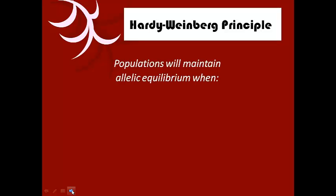Basically they said that populations will maintain an allelic equilibrium when certain conditions exist. Let's break down what this means. Allelic refers to alleles — the different forms of a gene, such as a dominant allele and a recessive allele. If we look at the gene pool and the alleles are in equilibrium, that means the types of genes in that population stay the same year after year. Equilibrium means staying the same, so if they're staying the same, there is no evolution in that population.